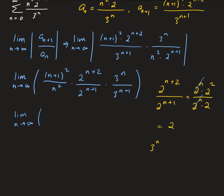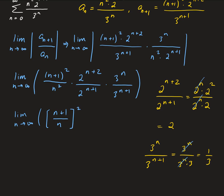For the other part, we have 3 to the n over 3 to the (n+1), which is 3 to the n over 3 to the n times 3. The 3 to the n cancels out, leaving us with one third. So assembling everything, we have (n+1) squared over n squared, times 2, times one third.